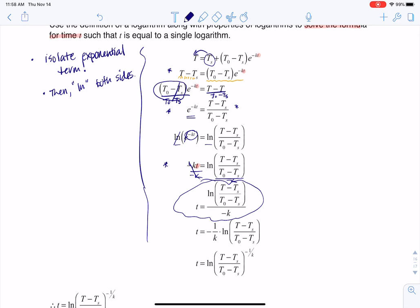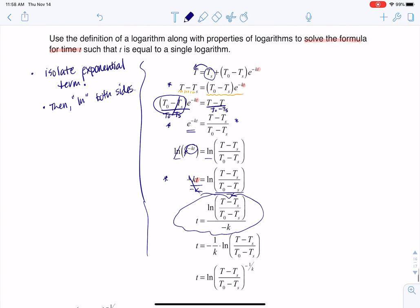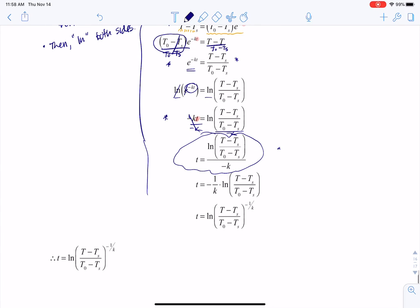The only reason I'm going to continue with this problem is because the direction said, go ahead and get a single logarithm out of this. And you could make the argument here that this already is a single logarithm, but I'm going to go a couple steps further. So when you divide by a number, that's like multiplying by its reciprocal, which is why you see negative 1 over k being multiplied to that logarithmic term.